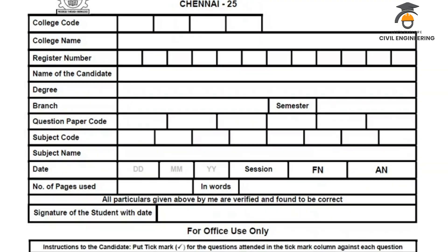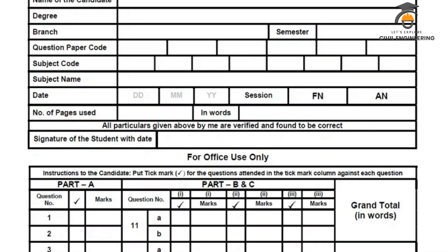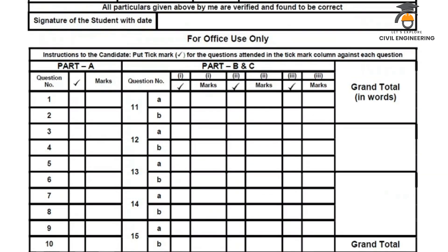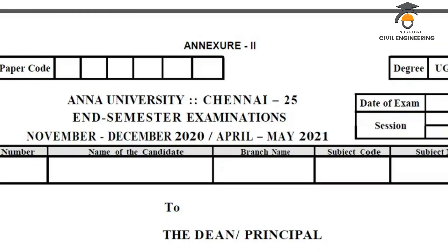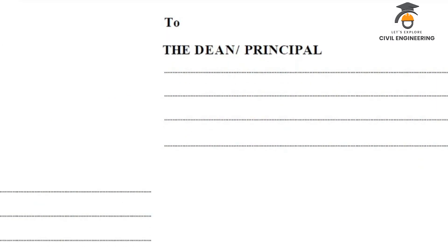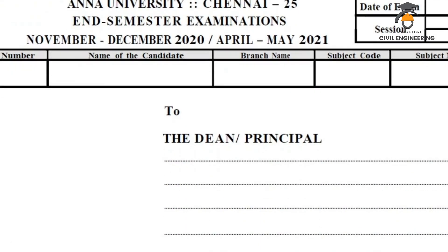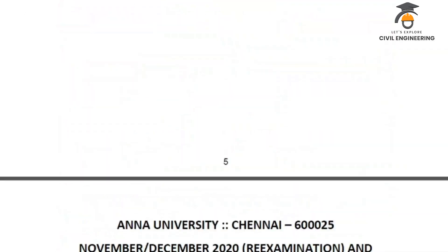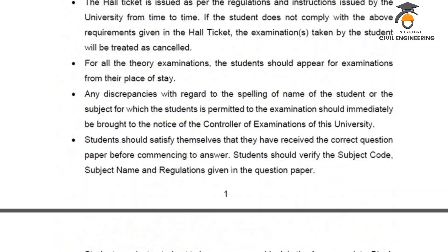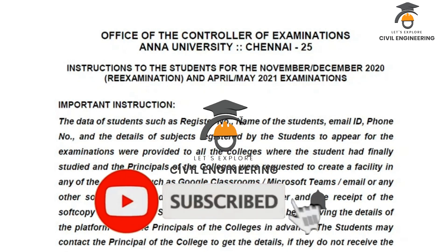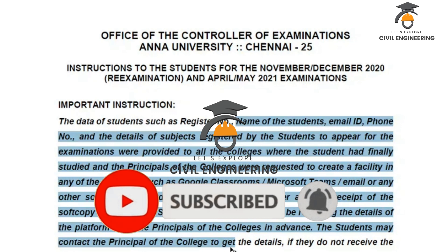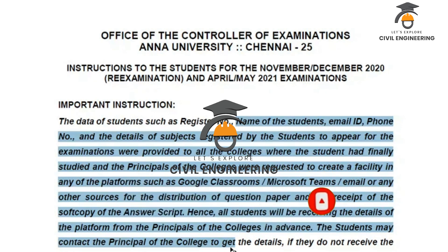Annexure 1 includes: College Code, College Name, Register Number, Name of the Candidate, Degree, Question Paper Code, Subject Code, Subject Name, Date, and Marks to fill up. This is about the instructions given by the university for re-exam and current April 2021 examination. For more university updates, please subscribe and share the link. Thank you.